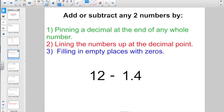You've got to add or subtract any two decimal numbers by pinning a decimal at the end of any whole number, lining the numbers up at the decimal point, and filling in any empty places with zeros.